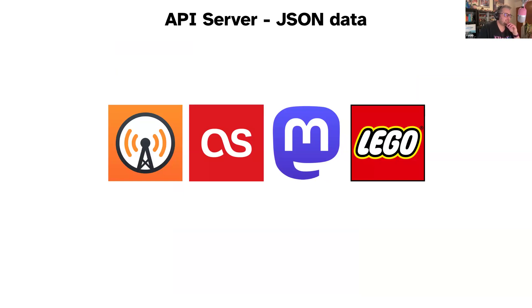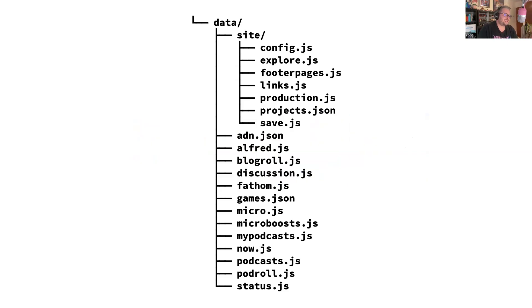The second part is probably the most complicated, which is my API server — and calling it an API is probably a little bit of a stretch. It's more like a bucket of Node scripts that run on a schedule at various different times. I'm pulling in a bunch of data: podcasts, my Last.fm music listening history, a full archive of my Mastodon posts (which I'm not actually using at the moment but it's still being collected), and also my Lego collection. These get written to JSON files in the API server, and then my site pulls those in as data files. You can see there's a lot going on in my data folder, so I have to selectively cache things to make sure my build doesn't take half an hour while it pulls in all this data.